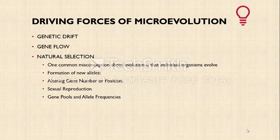Apart from natural selection, there are two factors that drive the process of microevolution. Number one is genetic drift and number two is gene flow. We will talk about them later in this section, but first we will start with natural selection theory and go much deeper.